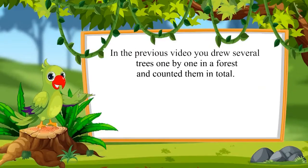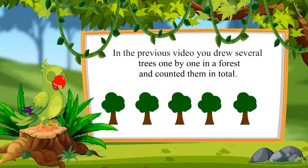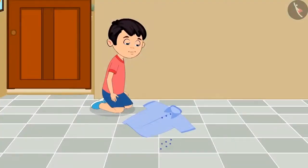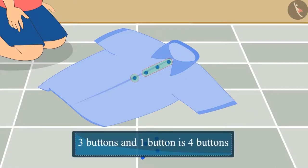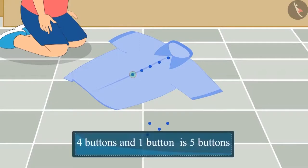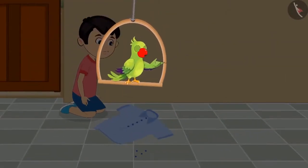In the previous video you drew several trees one by one in a forest and counted them in total. Today Jutu wants to stitch a few buttons on his shirt. He already stitched three buttons and then stitched one more — three buttons and one button is four buttons. Now Jutu stitched one more button: four buttons and one more button is five buttons. Count and tell how many buttons are stitched on Jutu's shirt — yes, five buttons in total.